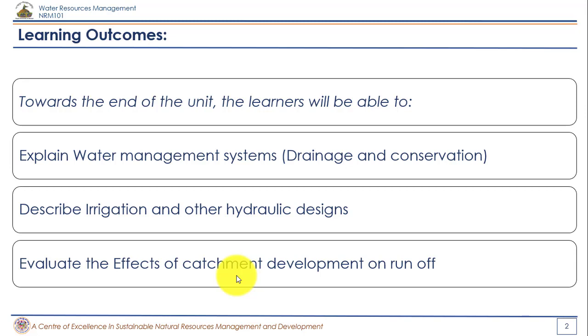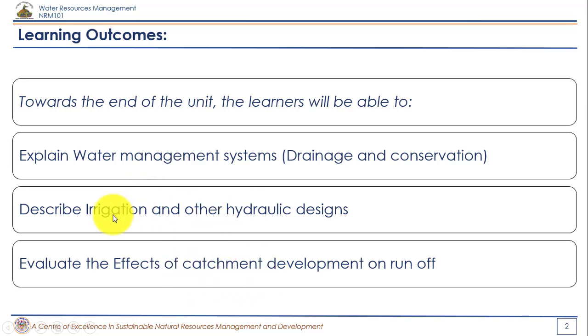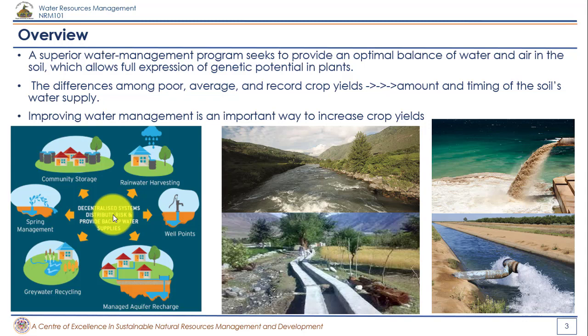By the end of the unit you should have a good grasp of these three things: first, drainage and conservation; second, catchment development; and third, irrigation — different kinds of irrigation methods and other hydraulic designs.